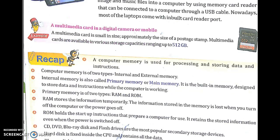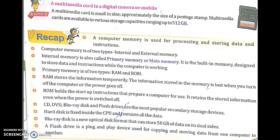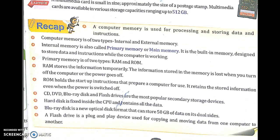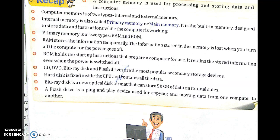Quick recap: Computer memory is of two types — internal and external. Internal memory is primary memory, which is of two types: RAM (temporary data store) and ROM (permanent data store). External memory includes secondary storage devices such as CD, DVD, Blu-ray disk, flash drives, and hard disk. Hard disk is fixed inside the CPU with all data stored internally. Blu-ray disk is a new optical disk storing up to 50 GB of data. Flash drive, also called pen drive, is a plug-and-play device used for copying and moving data from one computer to another.